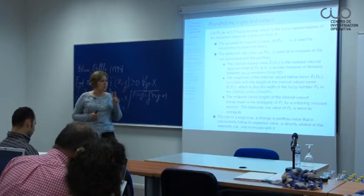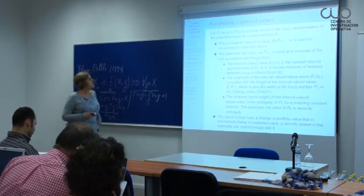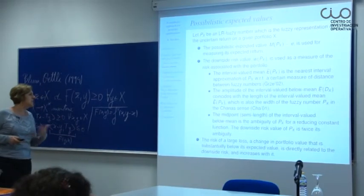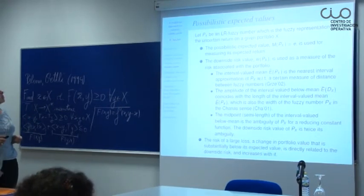These two possibility moments have very nice properties. The interval value mean used as a representation of the expected return is in fact the nearest interval approximation of the fuzzy number. The amplitude of the fuzzy number is the same as the amplitude of this interval. The downside risk value is the amplitude of the fuzzy number in the other sense, and is also two times the ambiguity of the fuzzy number — a well-considered quantity in fuzzy logic. We are using these values as constraints to build optimal portfolios.